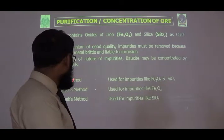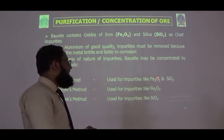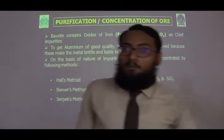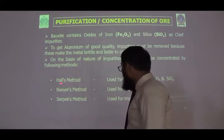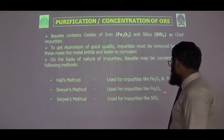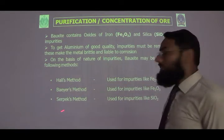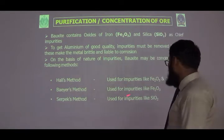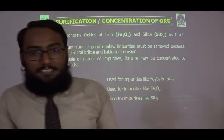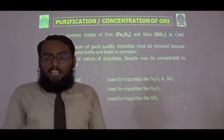There are different methods for removing impurities. The Hall's method is used when both iron oxide and silica impurities are present in bauxite. The Bayer's method is used when only iron oxide impurities are present. The choice of method depends on the type of impurities in the bauxite.